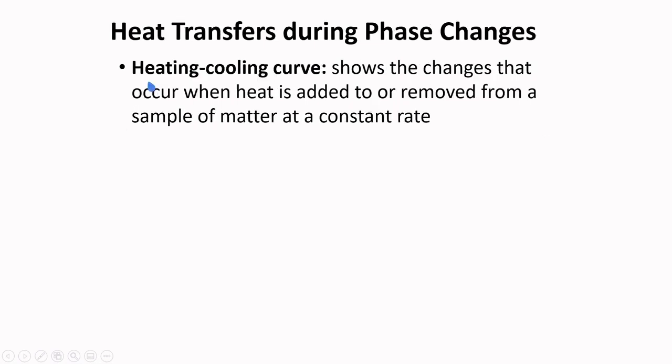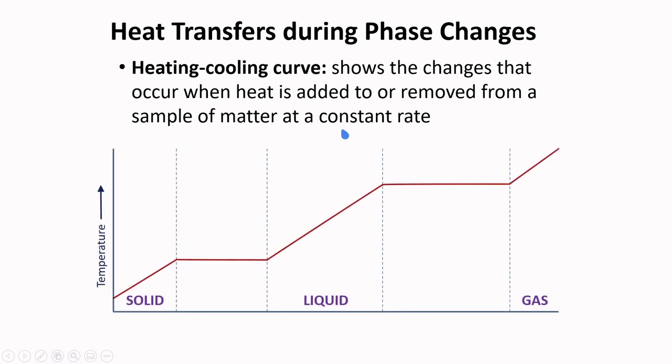Heating and cooling curves show the changes that occur when heat is added to or removed from a sample of matter at a constant rate. We can start from a solid and as heat is added to this solid, the temperature will increase up to the point of melting where liquid forms. Then, as heat is added further, we will get to a point where the liquid will start to vaporize and form the gas. Further infusion of heat will further increase the temperature associated to the gas particles.